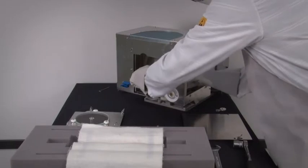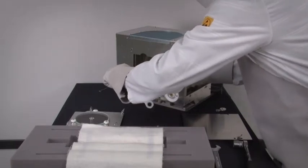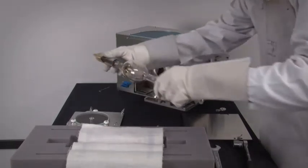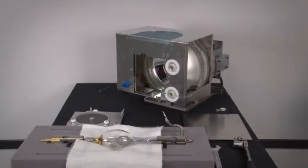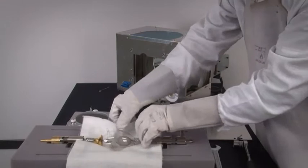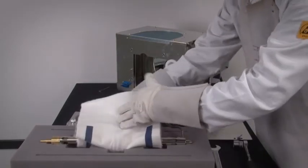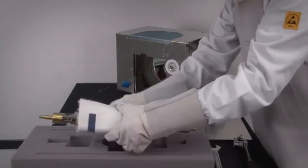Pull the lamp out of the lamp house while ensuring that the lamp comes out straight and doesn't hit any part of the lamp house. Place the lamp into a protective lamp container or lamp cloth and secure it.